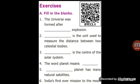Next, the word planet means dash. Answer: Wanderer. Next, dash planet has many natural satellites. Answer: Jupiter has many natural satellites.